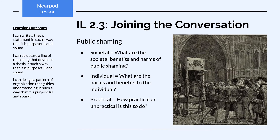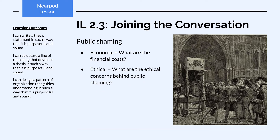Similarly, for the issue of public shaming, there are a number of different angles of examination. We could look at the societal versus individual benefits and harms, the practicality of incorporating a public shaming system as punishment for crime, the economic angle — what are the financial costs or benefits? — and the ethical concerns behind public shaming.